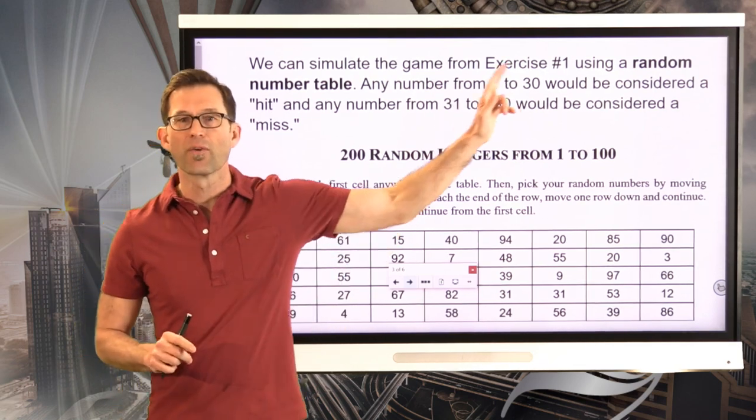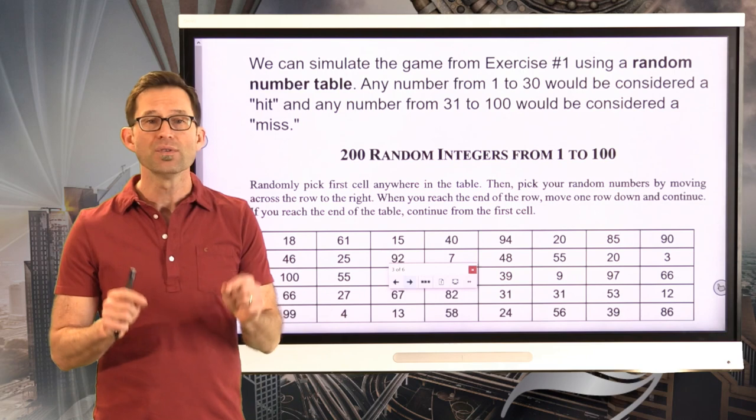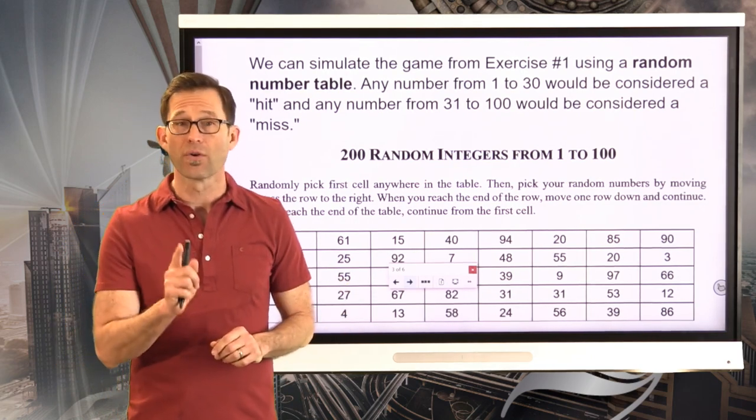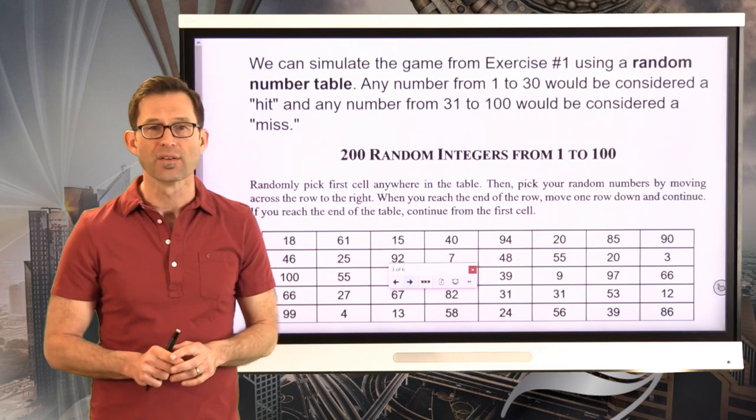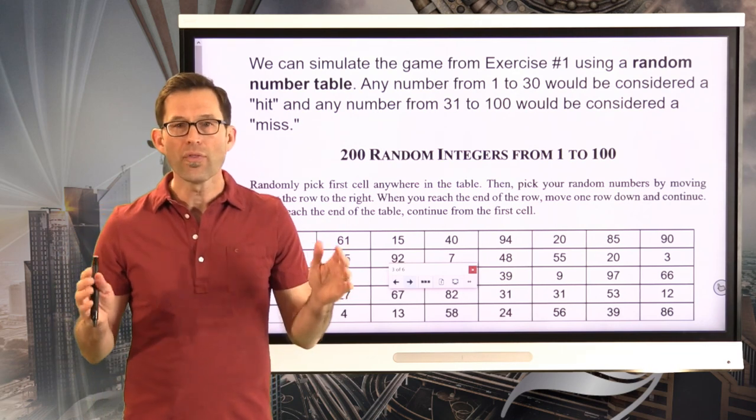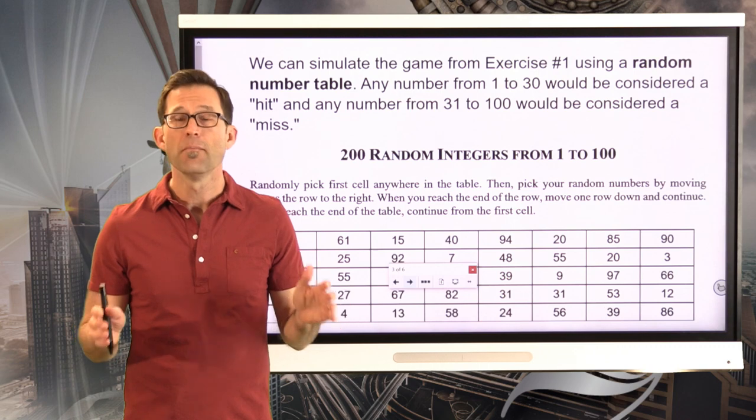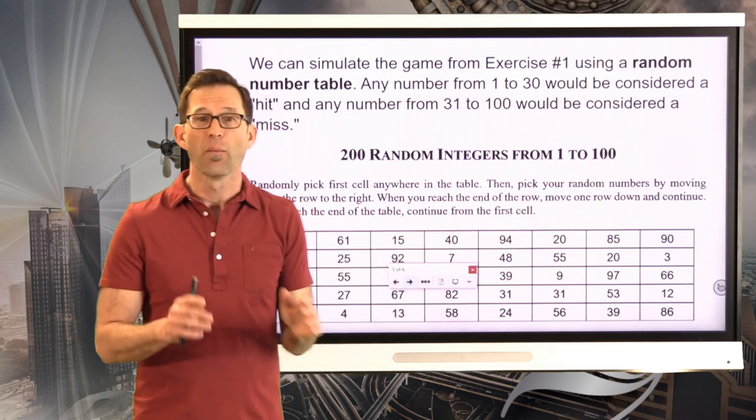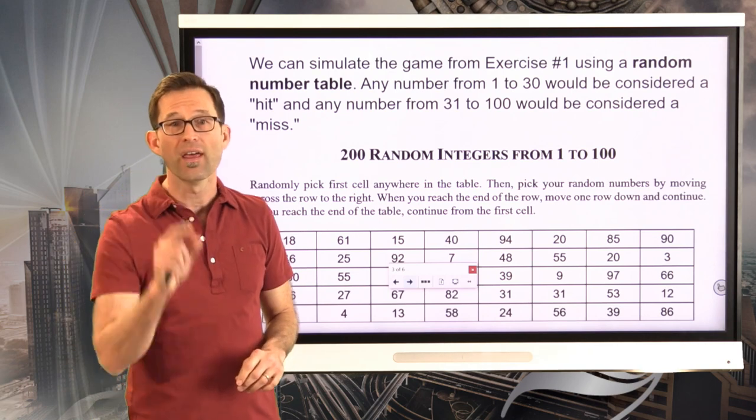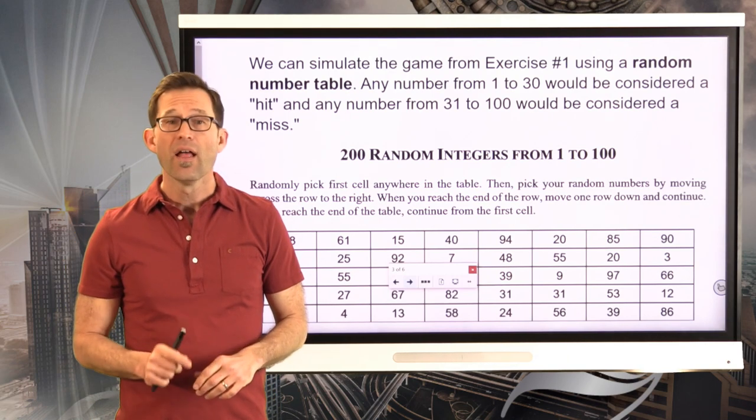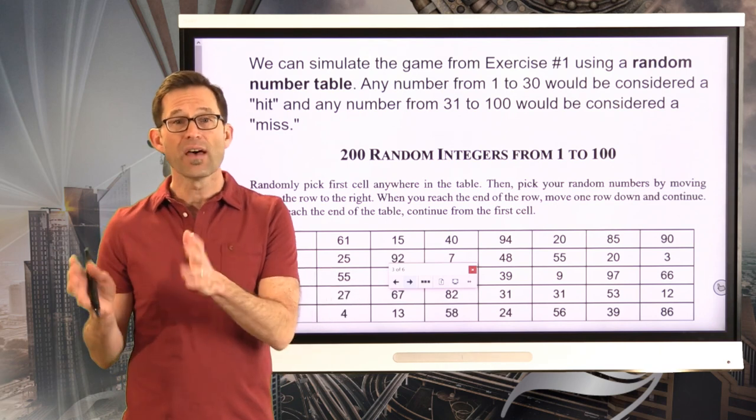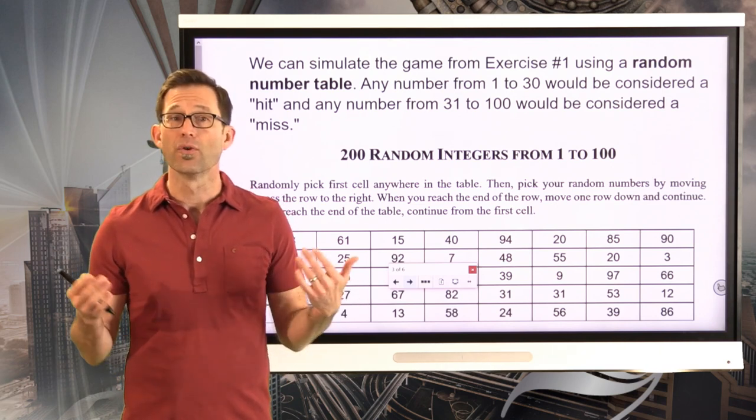So kids probably wouldn't see that math until at least 11th or 12th grade in high school, possibly not until college. So what we're going to do is we're going to simulate this. And we can simulate the game from exercise number one by using a random number table. Any number from 1 to 30 would be considered a hit. Understand why that is - 1 to 30 is considered a hit because if we've got random numbers from 1 to 100, and we know the probability that we get a dart in is 30%, then 30 out of the 100 should be considered a hit, and 70 out of the 100 should be considered a miss.